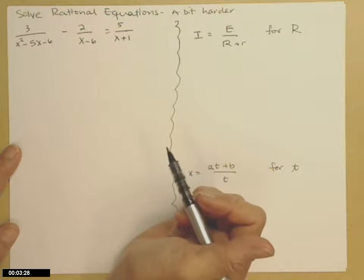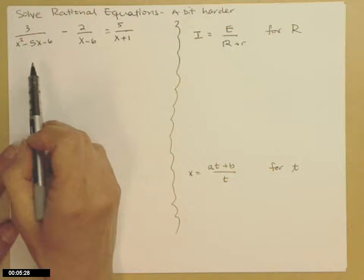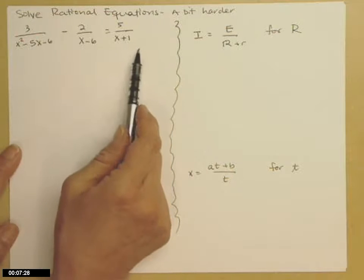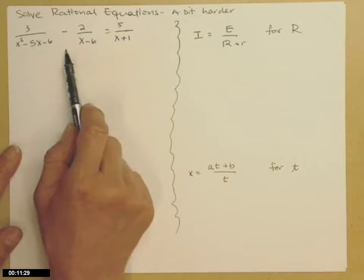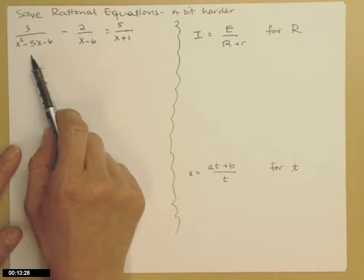Here's another example of solving rational equations. When we look at the rational equation here on the left, notice the denominator of my first fraction is a quadratic, so I should factor it so that I can identify the LCD.